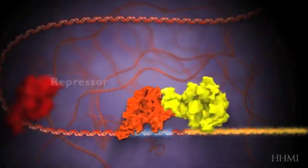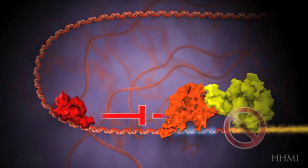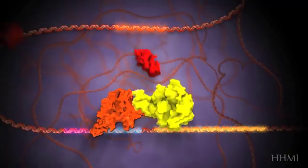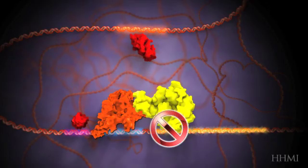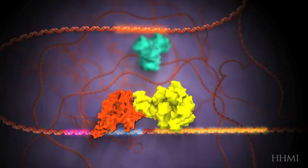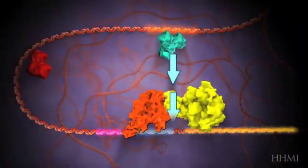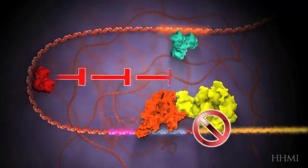Another type of transcription factor called a repressor inhibits the activation of transcription. Repressors can act in different ways. Some repressors bind to the binding site of activators and prevent activators from binding to DNA. Others interfere with the molecular interaction between the activators and the RNA polymerase.